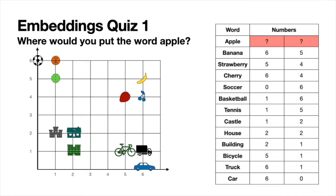Here is the question: we need to locate the word 'apple' in this embedding. There are three options — A, B, and C. Feel free to pause the video and think about it. I would put it on spot C, because in this word embedding, words that are similar are located close by and words that are different are located far away. So 'apple' would be close to other fruits like banana, cherry, or strawberry — at coordinates (5, 5). This is one very important property of word embeddings: similar words are located close by and different words are located far apart.